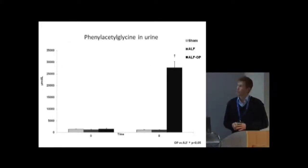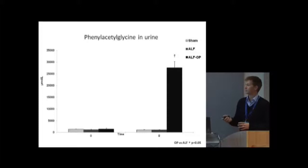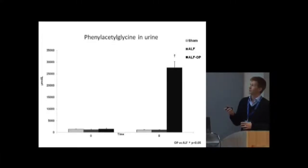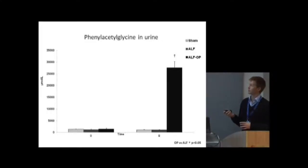Furthermore, in urine at time 0 and time 8, the conjugation product phenylacetylglycine was significantly higher in the OP-treated animals compared to ALF and sham.